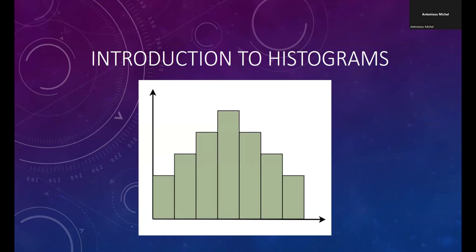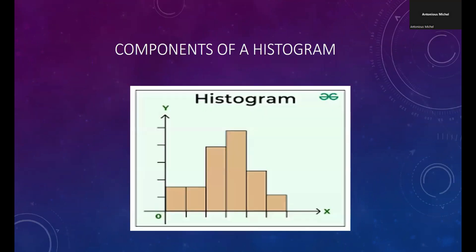Visualize numerical data distribution with histograms to gain insight into data patterns and trends. Components of a histogram: X-axis shows intervals or bands, Y-axis shows frequency of data points, and bars represent frequency in each interval.